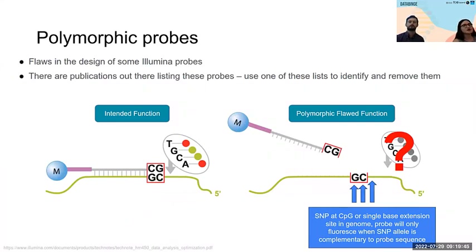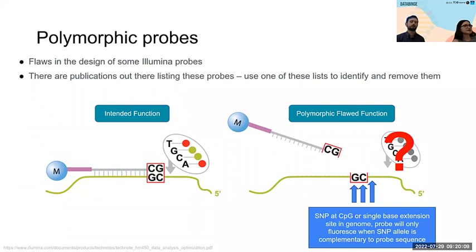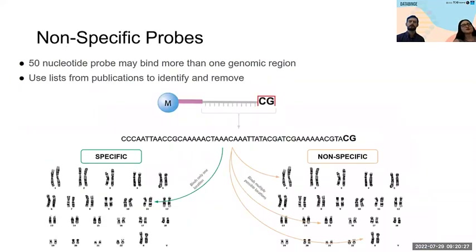The second class of probes are called polymorphic. Each CpG on the array is interrogated by a physical probe that's 50 nucleotides in length, hybridizing to a target sequence in the genome. If there are SNP loci underlying that 50 nucleotide sequence, it can interfere with how the probe binds the DNA it's intended to target, interfering with the signal. Databases have been created to index where these probes are, and we'll be excluding them.